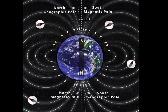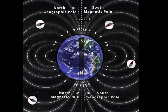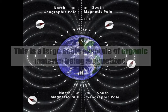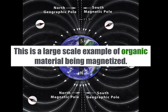The planet Earth is an example of a massive magnet. You have a north end and a south end. The magnetic south is our geographic north, and the magnetic north is our geographic south, our south pole. This is a large-scale example of an organic material being magnetized.